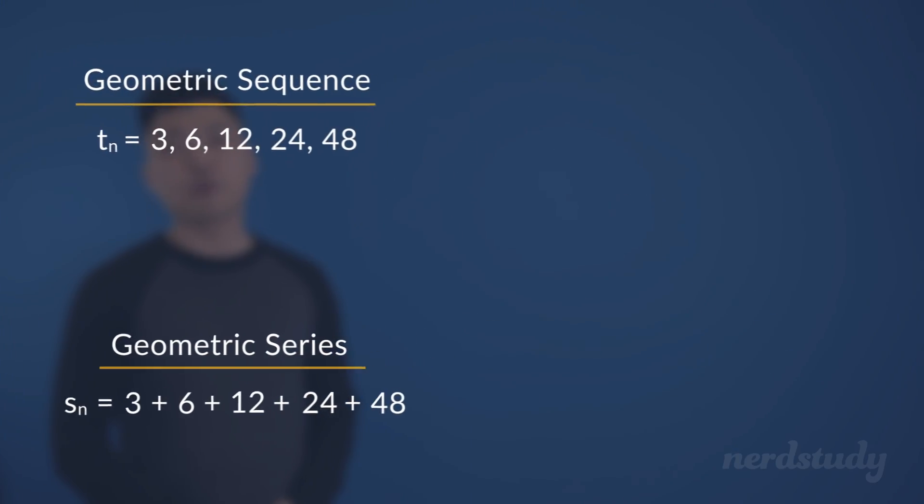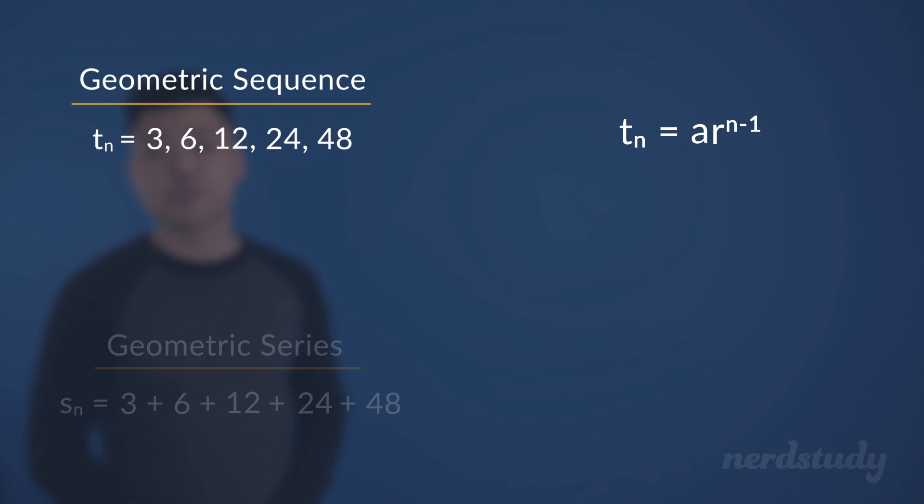Now let's bring back the formula for geometric sequences to review what it represented. We remember that the a here stands for the first term in the sequence, the r stands for the common ratio between each term, and the n stands for the number of the term that we're looking for. Great!